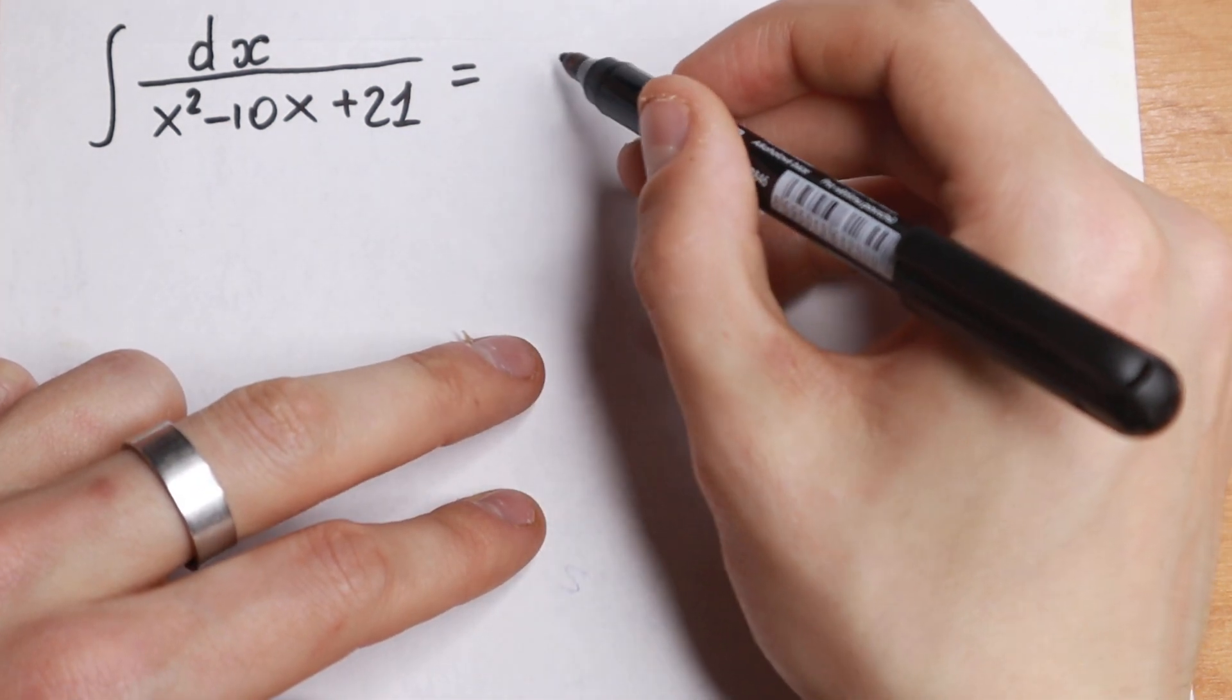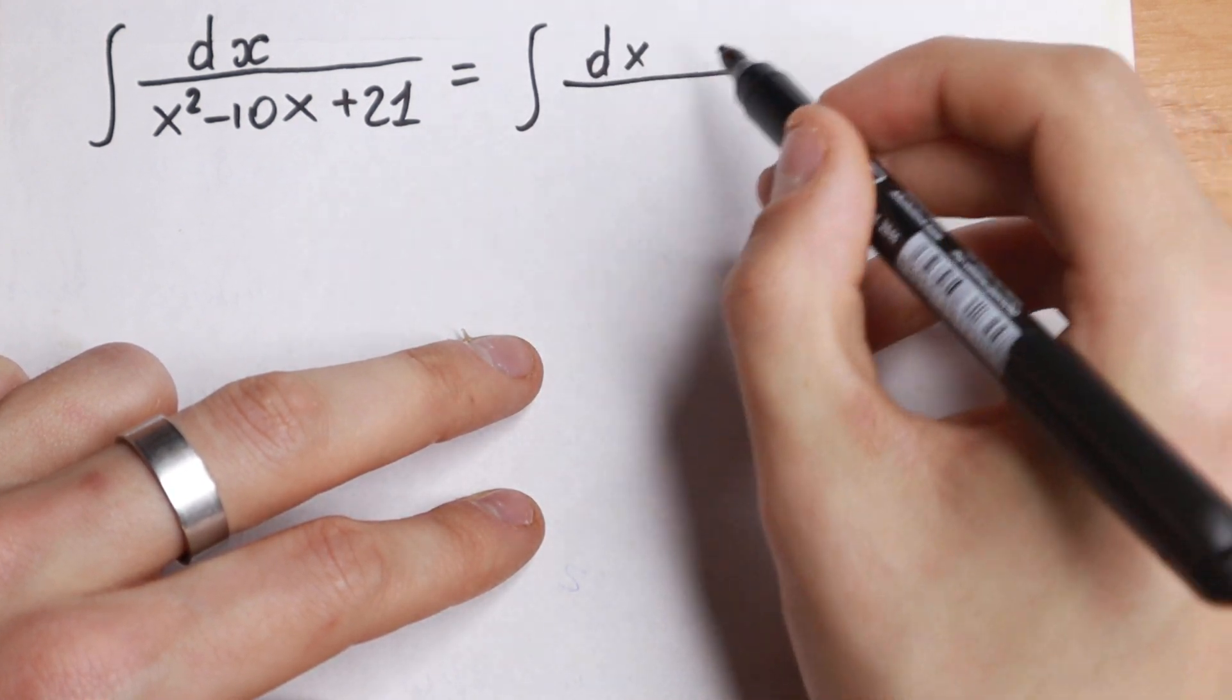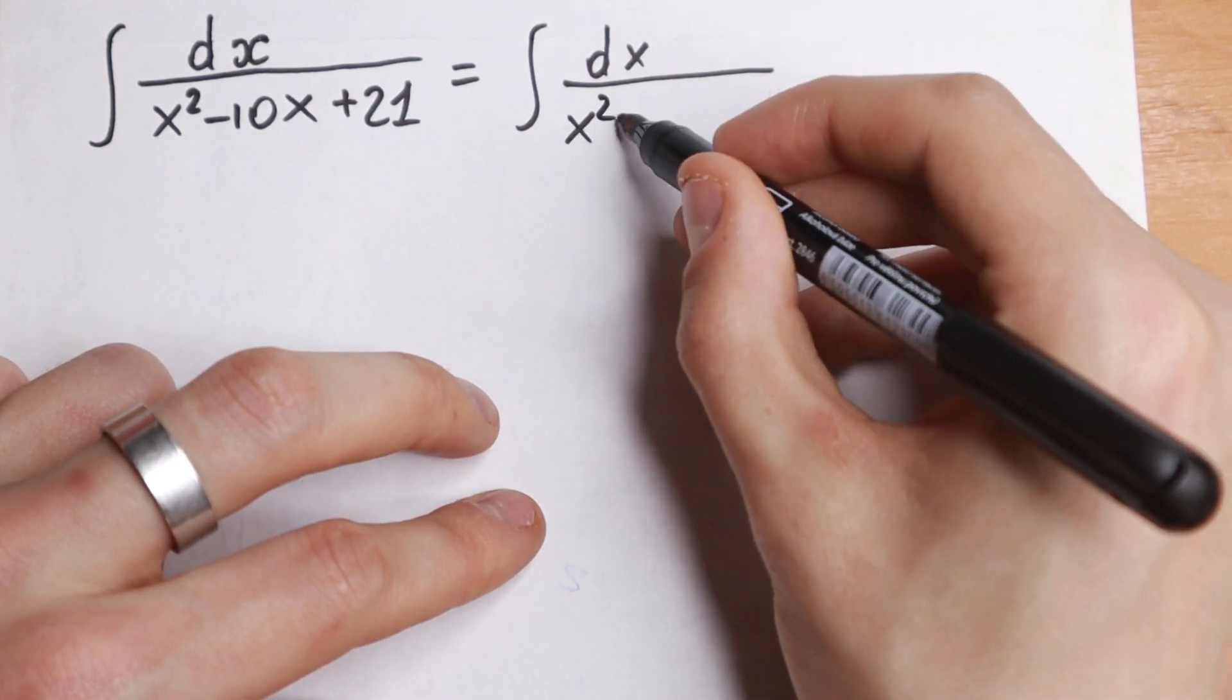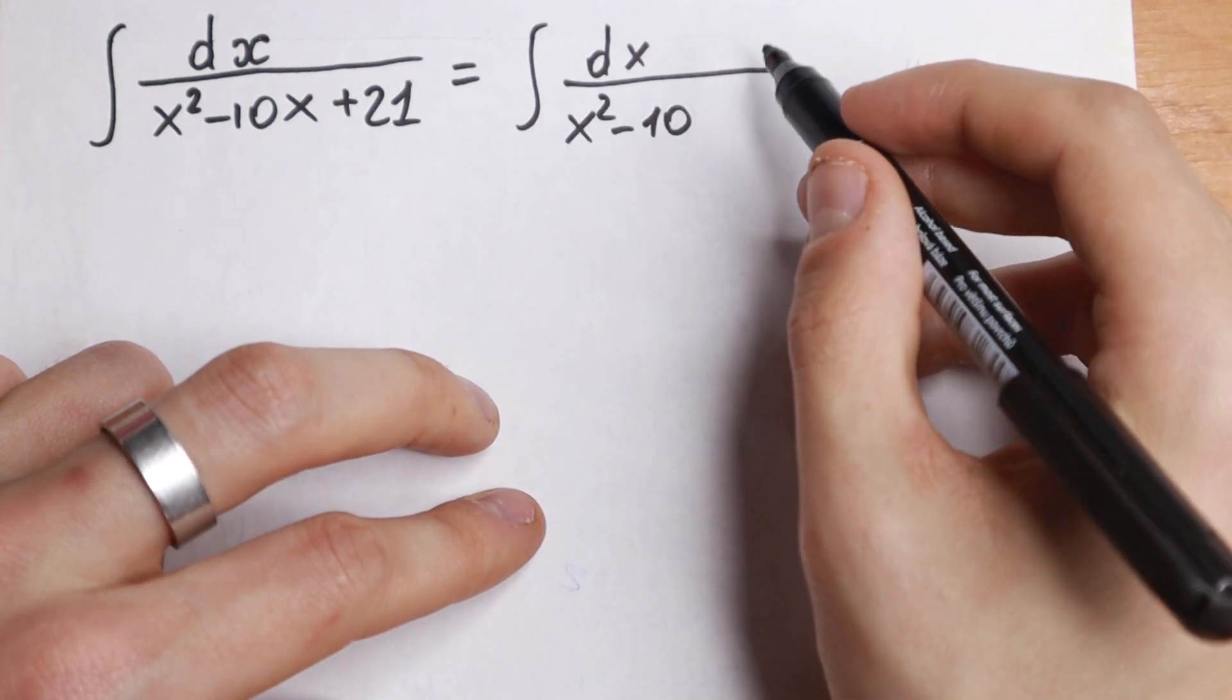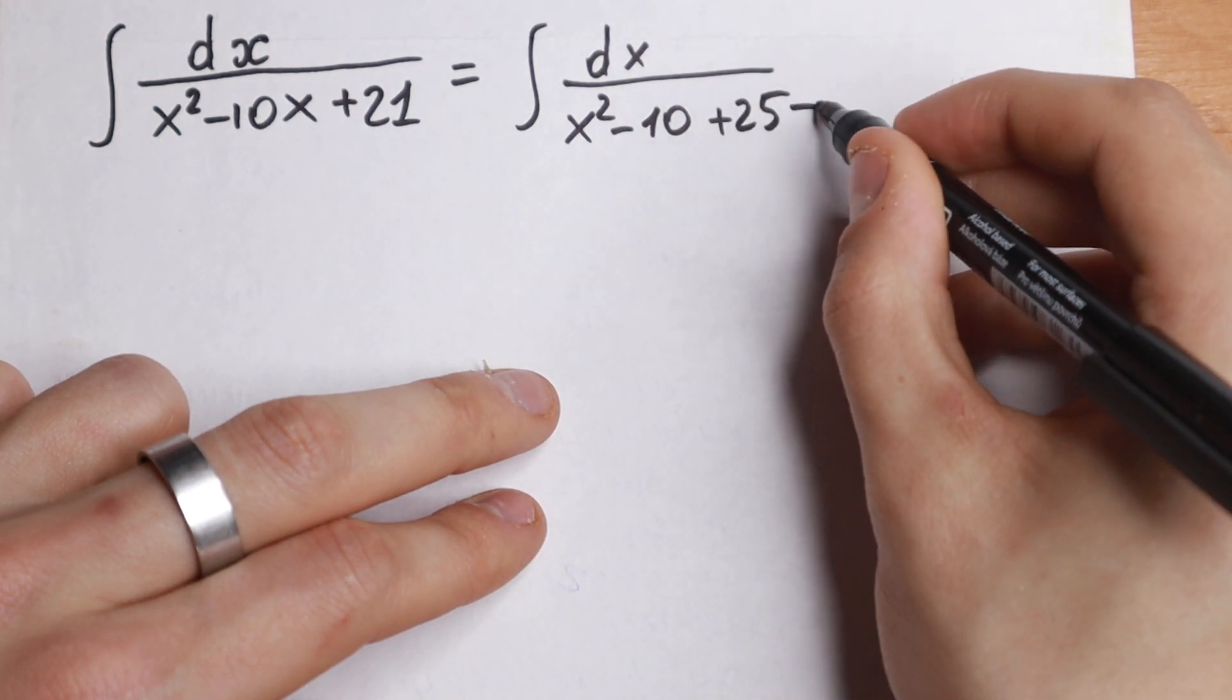So first of all, let's take a look. Integral dx, and in the denominator we will have x squared minus 10x. And I want to write this 21 as 25 minus 4.